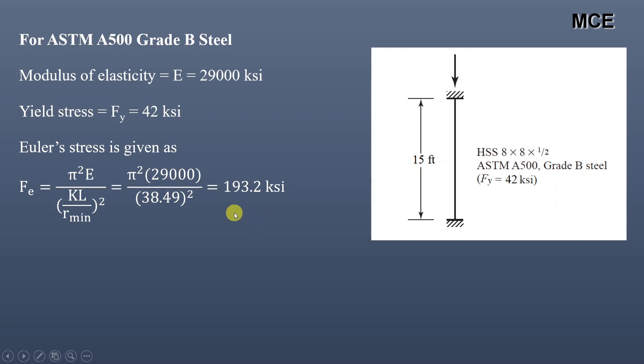Now to calculate the value of critical stress, we have to first check the value of 4.71 times the square root of E divided by Fy, which is equal to 4.71 times square root of 29,000 divided by 42, which is equal to 123.76.